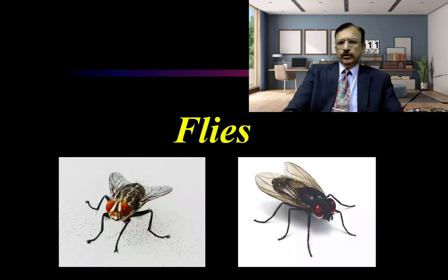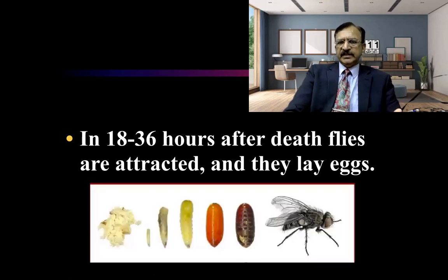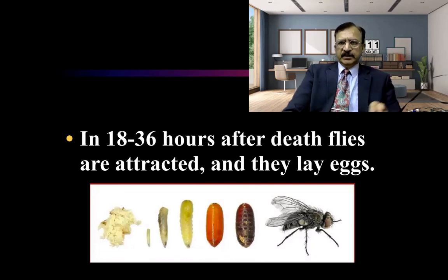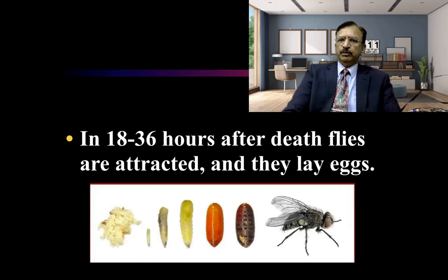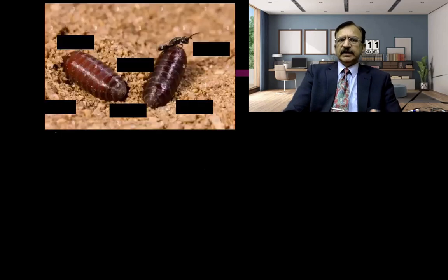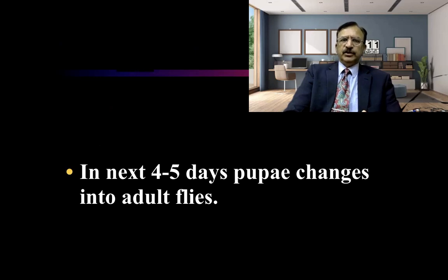About flies: flies are attracted to a body after 18 to 36 hours after death, when foul smells are emitting. They lay eggs, which hatch into larvae. Larvae convert into pupae, and then adult flies emerge. Since these processes are time-bound, we can study the life cycle stage — whether eggs, larval form, pupae form, or adult flies emerging — to estimate the time since death. Eggs hatch into larvae or maggots within 24 hours of being laid, they become pupae in the next 4 to 5 days, and in the next 4 to 5 days the pupae change into adult flies.